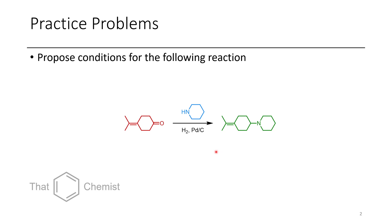Of course you could always do reductive amination following the Borch reduction using sodium cyanoborohydride, but as the last episode really illustrated, there are several different approaches that you can use to access amines from carbonyl-containing compounds.